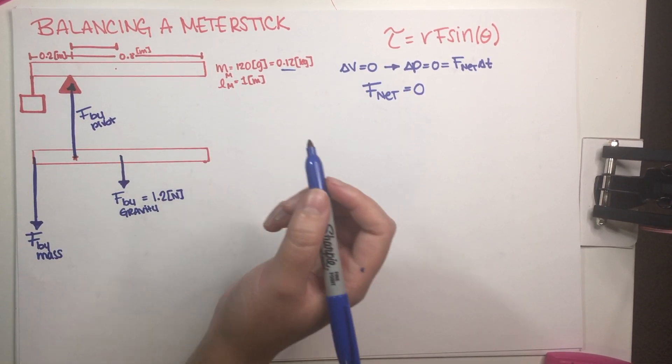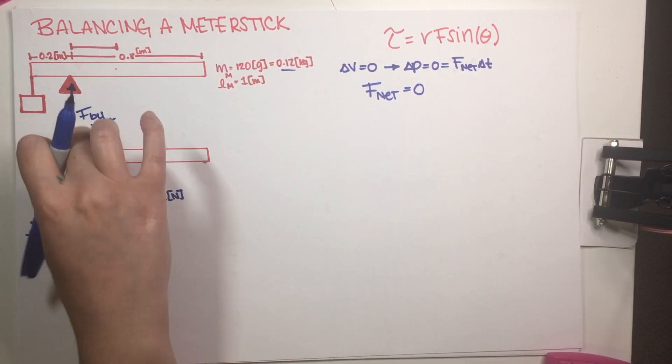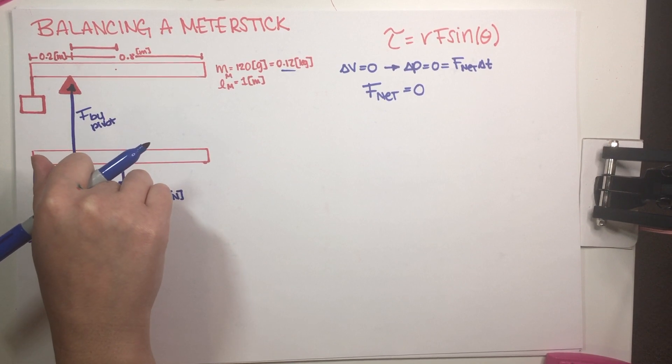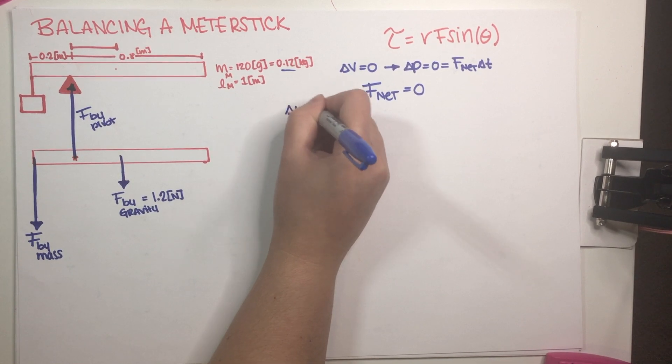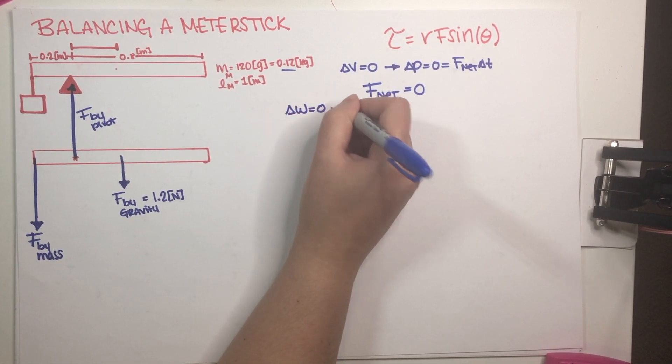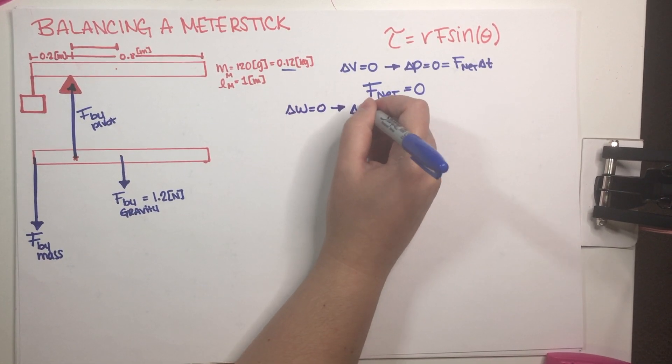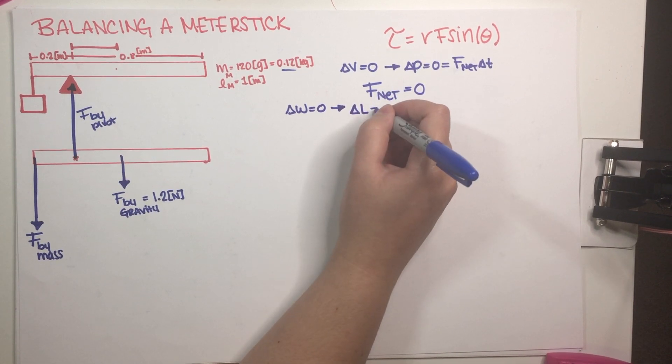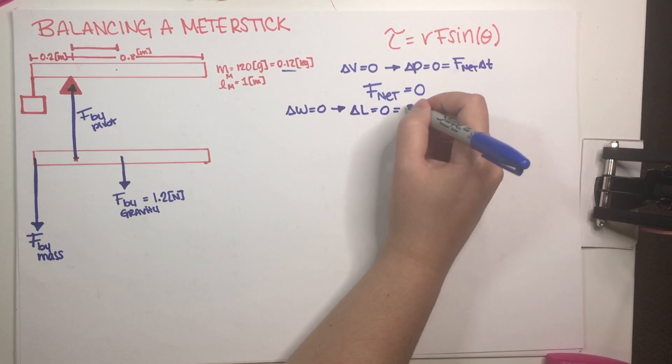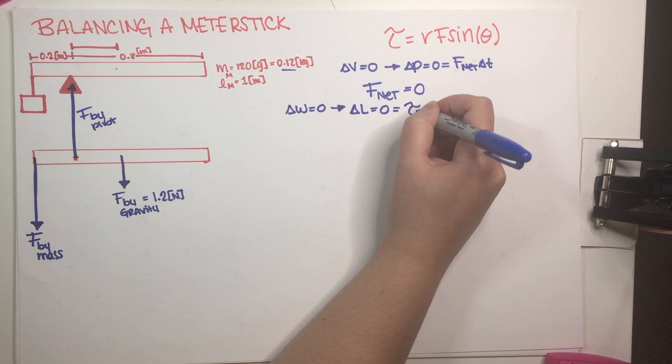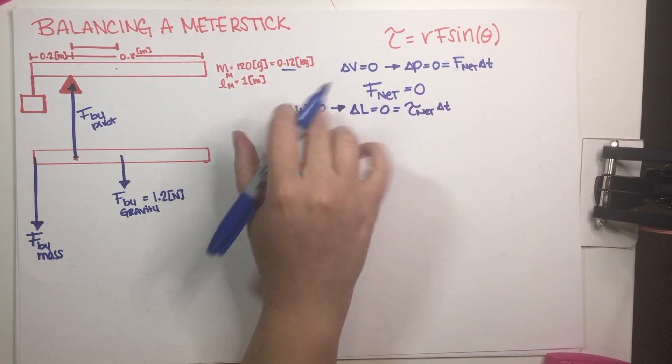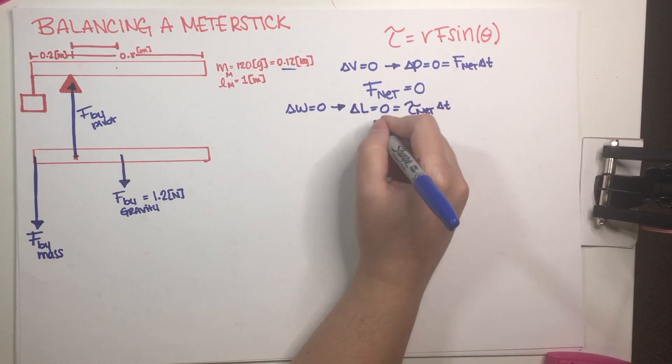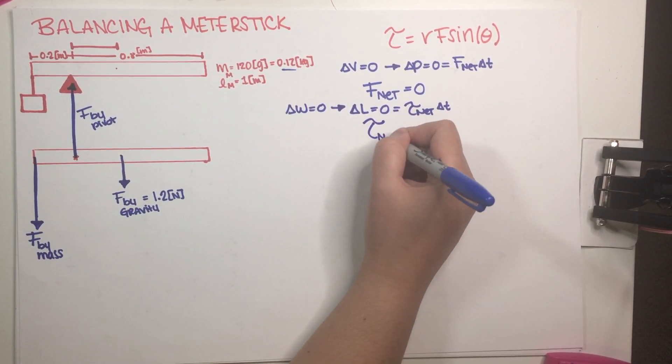Now, the other thing that we know is that this thing is not rotating around the pivot point. So this thing not rotating around the pivot point means that there is no angular velocity, which means that there is no change in angular momentum. And angular momentum is equal to net torque times delta T.